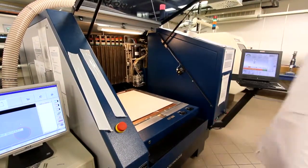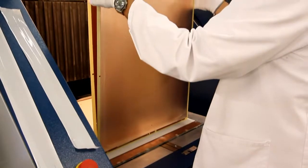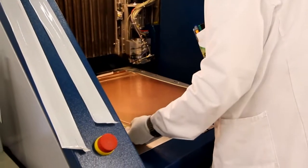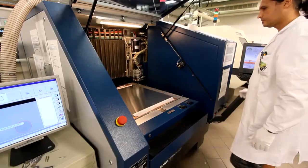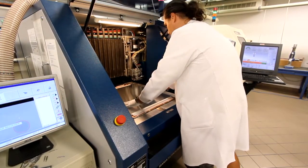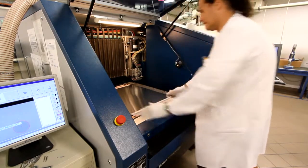To set up the drill, the operator first puts a panel of exit material on the drill bed. This stops the drill tearing the copper foil as it comes through the PCB. Then he loads one or more PCB panels and a sheet of aluminum entry foil.